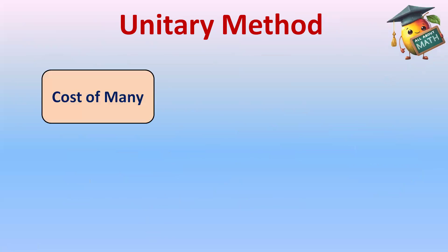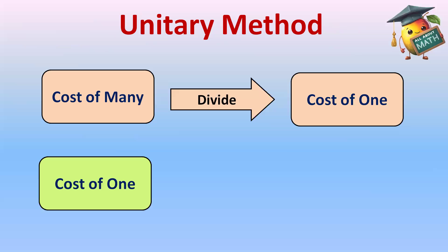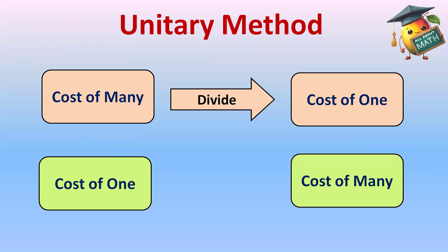The rules for unitary method: if the cost of many things is given and we need to find the cost of one item, the operation used is division. If the cost of one item is given and we have to find the cost of many items, then the multiplication operation will be used. Let's see an example.